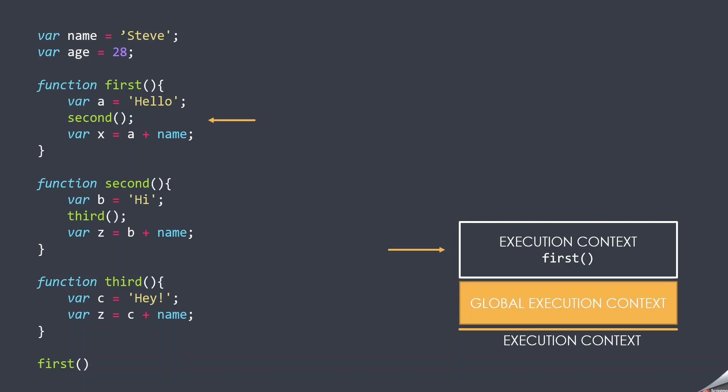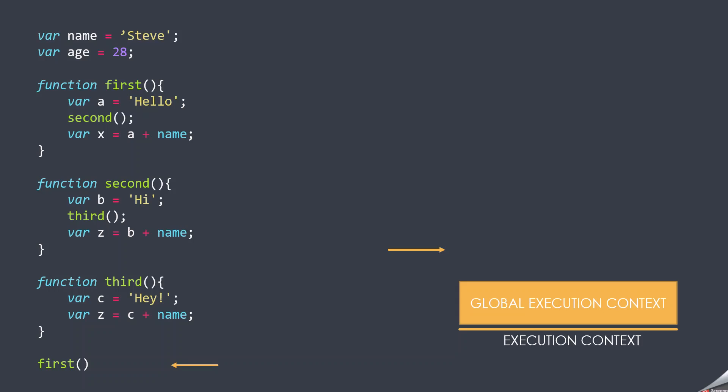When the third function returns, its execution context is removed from the execution stack, and the second function becomes the active execution context. Inside the second function, we are declaring variable Z, which will be stored in the execution context of the second function. Then the second function also returns, so its execution context also gets removed from the execution stack, and we are back to the first function. Inside the first function, we are now declaring variable X, which gets stored in its execution context. The first function also returns, so its execution context gets removed from the stack.